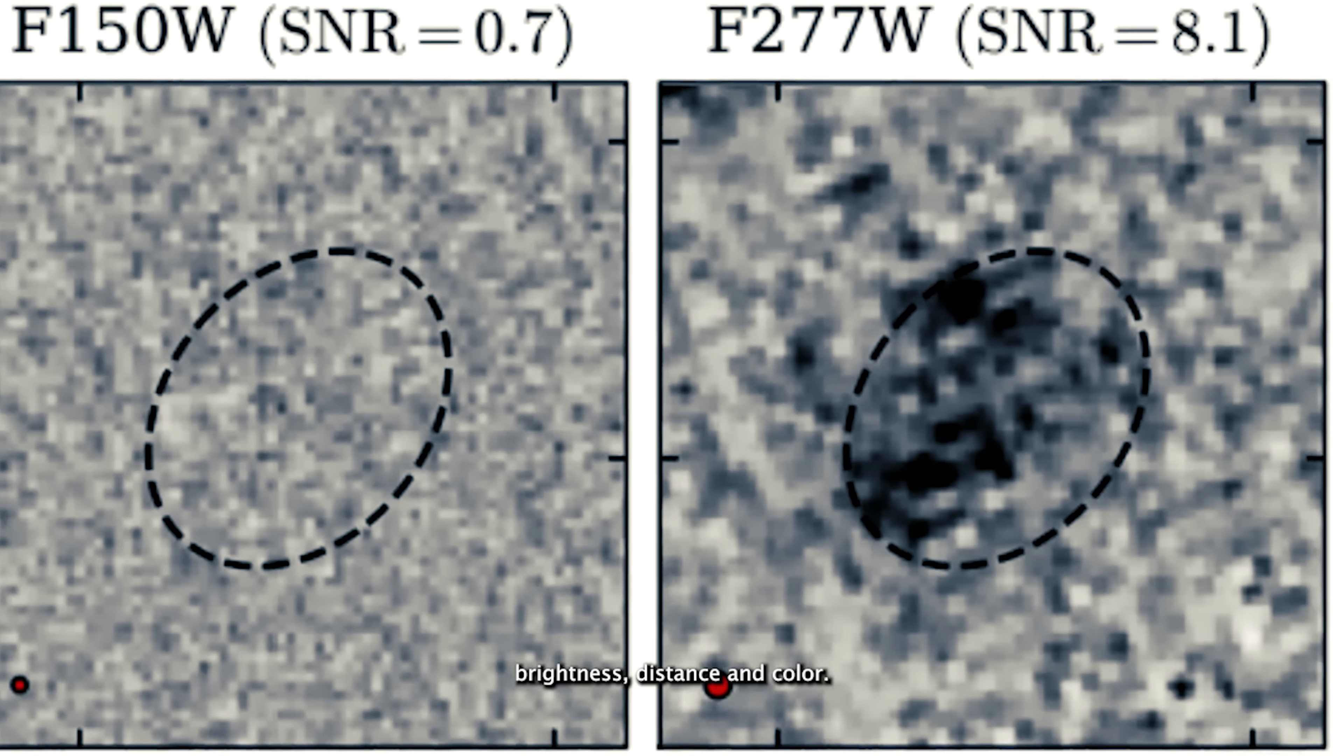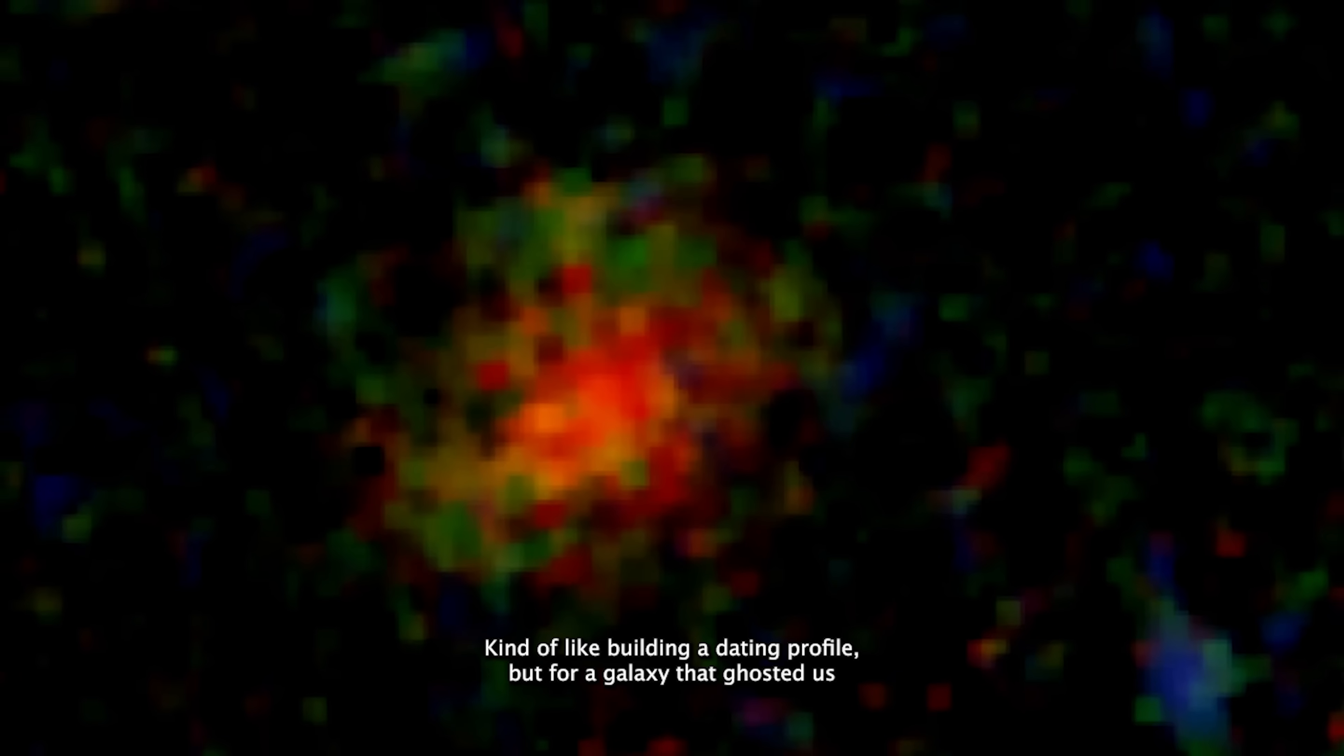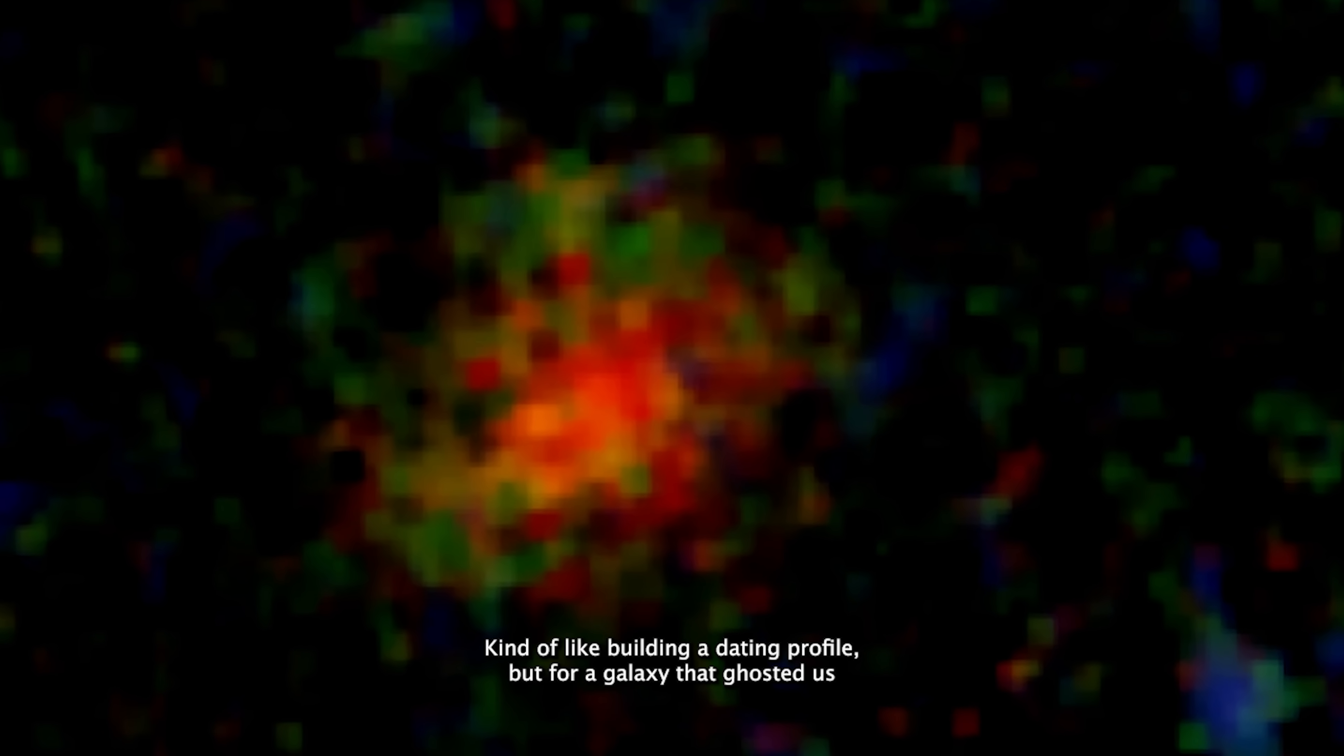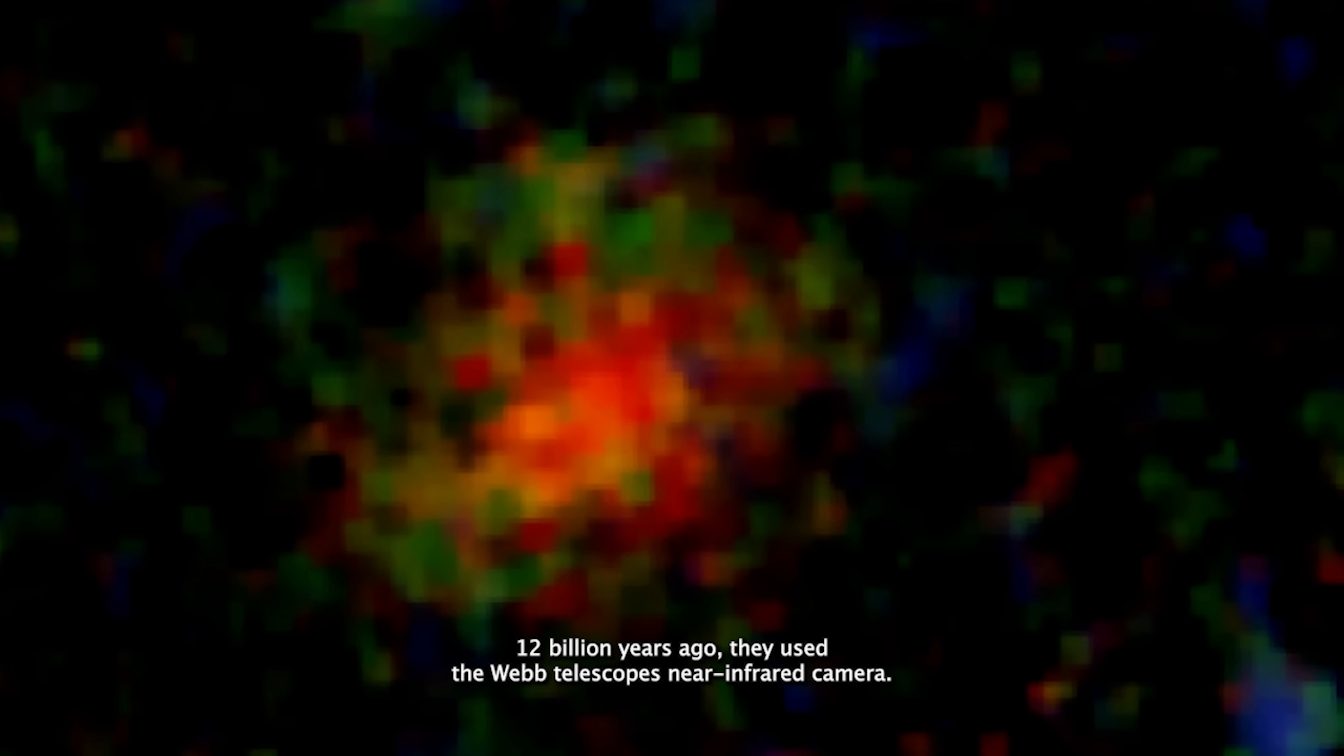Mass, brightness, distance, and color. Kind of like building a dating profile, but for a galaxy that ghosted us 12 billion years ago.